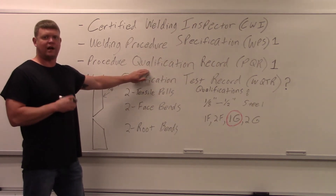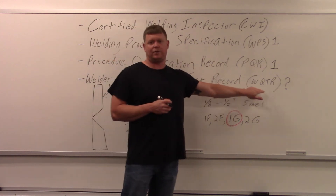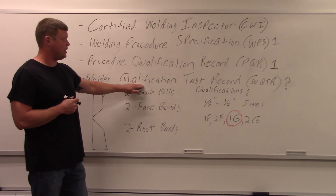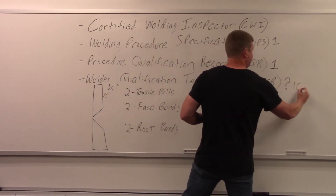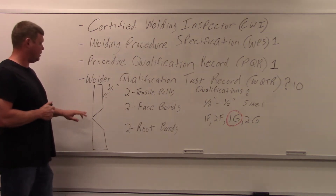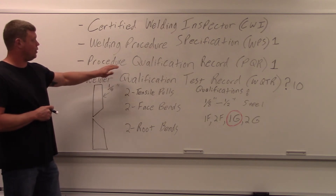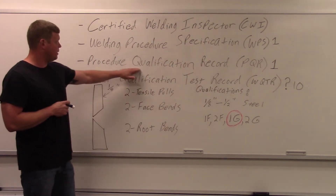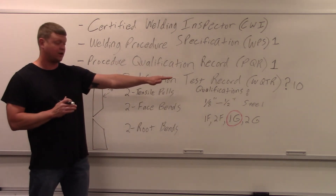The welder that does the PQR is now certified because they completed all that testing. But you still have to write up a Welder Qualification Test Record, or WQTR - this is the actual welding certification for the welder. For however many welders are producing that part, that's how many WQTRs you need. Ten welders means ten WQTRs. There tends to be less testing required for each welder after the PQR, since the PQR involved a huge amount of testing. Welders are usually just doing two face bends or two root bends for the WQTR, depending on the code.